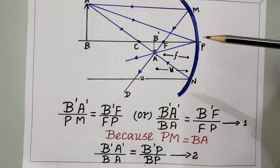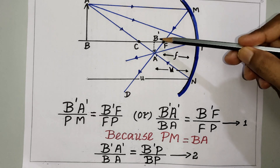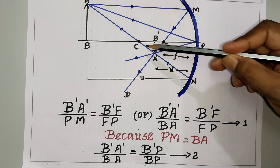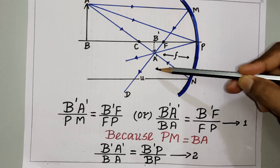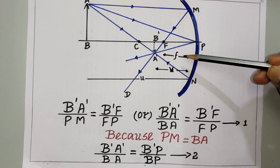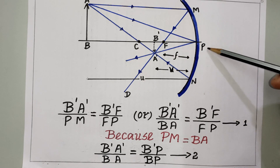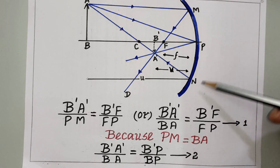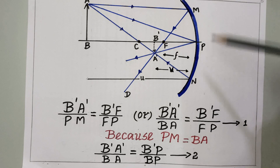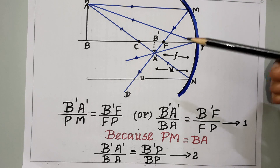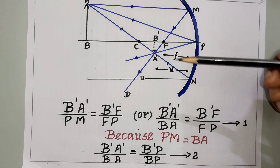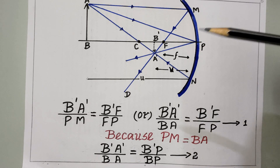Look at the diagram: AB is the object placed beyond C. According to the ray diagram rules we get image A'B' between C and F. Here u is the object distance, v is the image distance, f is the focal length, P is the pole of the mirror, and MN are the two ends of the concave mirror. We can use a convex mirror similarly.